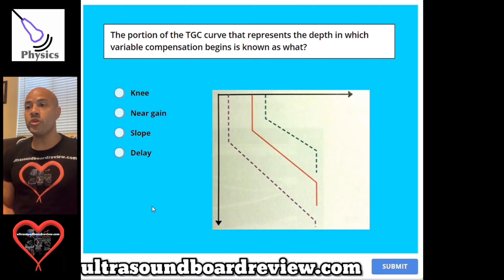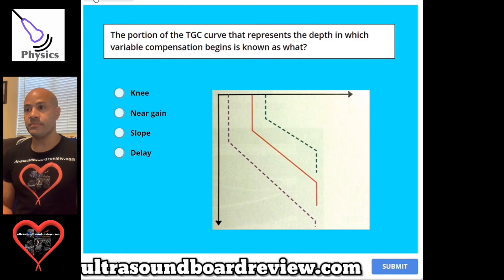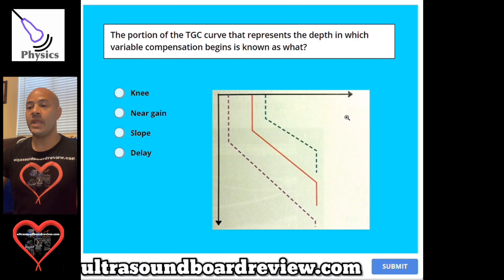Question 90. The portion of the TGC curve that represents the depth at which variable compensation begins is known as what? The answer is D, delay.